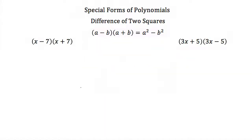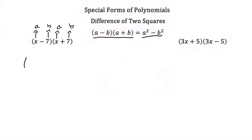Let's try using this with x minus 7 times x plus 7. We have the same numbers with one minus and one plus, so it's in the form a minus b times a plus b. Our a is x and our b is 7. Plugging in: x squared minus 7 squared, which equals x squared minus 49.